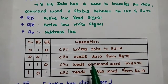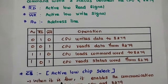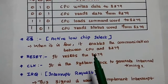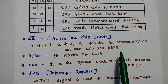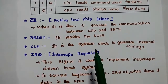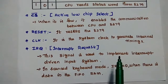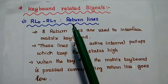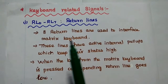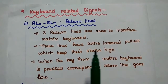The combination 110 means the CPU loads a command word to 8279; 101 means the CPU reads the status word from 8279. Next, chip select is the active low signal — whenever it is low, it enables communication between the processor and 8279. Reset is used to reset the keyboard display interface. The clock represents the system clock to generate timing intervals. IRQ (interrupt request) is used to implement the interrupt-driven input system to the processor. For keyboard-related signals, RL0 to RL7 are the 8 return lines used to interface the matrix keyboard with the processor. These lines have active internal pull-up resistors which keep their status always high.